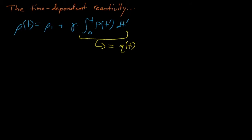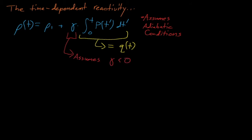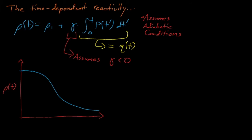This power integral equals the amount of energy released during the transient, converted to a change in reactivity by multiplying by the feedback coefficient gamma. This equation assumes that all energy generated stays in the system, which is a reasonable assumption even with circulating coolant due to the extremely short length of prompt supercritical transients. Also, this expression assumes that gamma is negative, which is a matter of convention. If we plot the reactivity as a function of time, we see that it starts off level while power is still low, then decreases quickly throughout the transient as the reactor heats up, eventually asymptoting. The inflection point occurs at T_m, the time when power reaches its maximum.